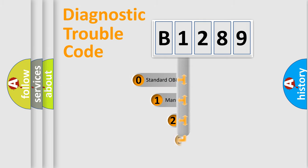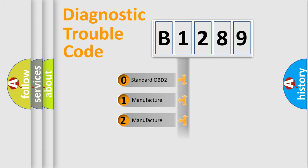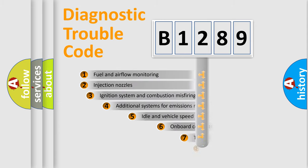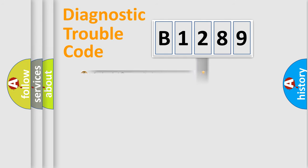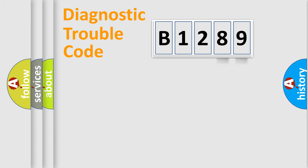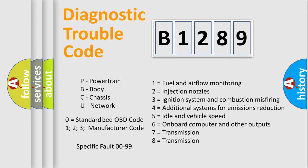This distribution is defined in the first character of the code. If the second character is expressed as zero, it is a standardized error. In the case of numbers 1, 2, or 3, it is a more specific car-manufacturer error. The third character specifies a subset of errors, and the last two characters define the specific fault of the group. This division is valid only when the second character is zero.